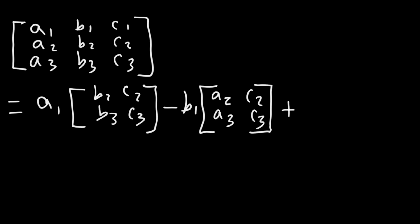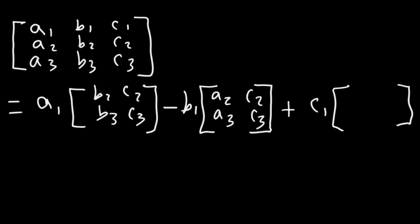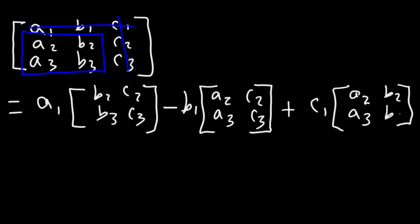And then it's going to be plus the third element in the first row, which is C1. C1 is in the first row, third column, and so it's going to have these four elements in the 2x2 matrix: A2, A3, B2, B3.